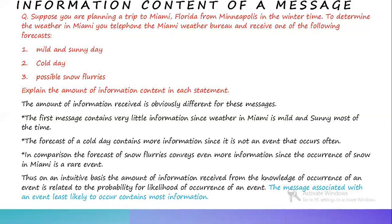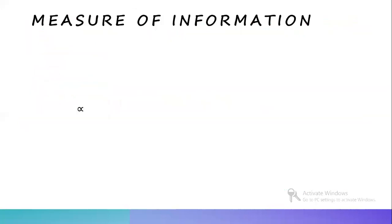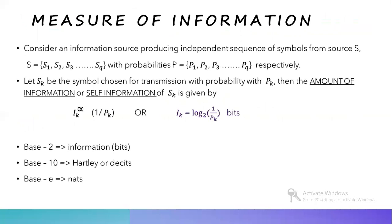Next, what is the measure of information? A measure is necessary to know the information content of various messages produced by an information source. Consider an information source producing independent sequences of symbols from source alphabets S = {s1, s2, s3, ..., sq} with probabilities P = {p1, p2, ..., pq} respectively. Let sk be the symbol chosen for transmission at any instant with probability pk. Then the amount of information or self-information of sk is given by Ik = log(1/pk) to the base 2, in bits.